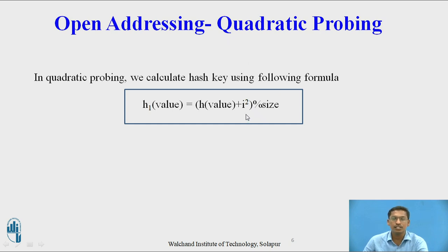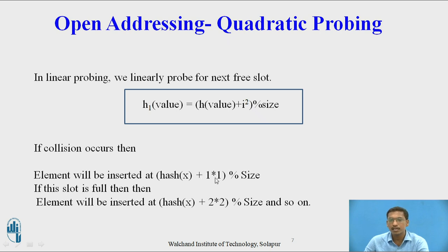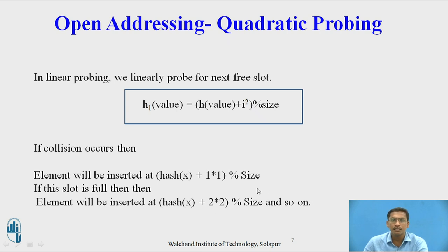The value of i ranges from 1 to n. So initially if collision occurs, the new position is (hash_value + 1²) mod size. If that slot is also full, we try (hash_value + 2²) mod size, and so on. So if collision occurs, the element will be inserted at hash(x) + i² mod size, with i starting from 1 and incrementing each time.